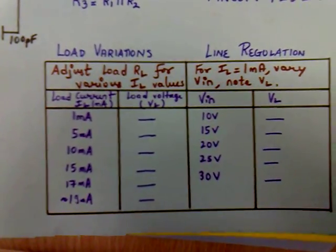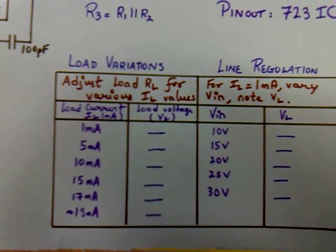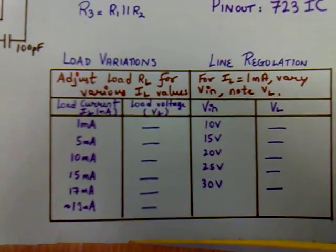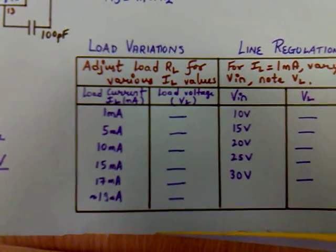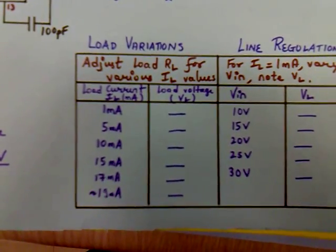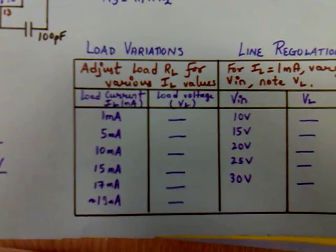Observations. Load regulation. For load regulation, adjust the load RL for various values of IL. Vary the load current from 1 milliamp to 19 milliamps and note down the corresponding load voltage.